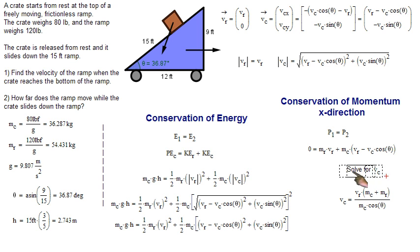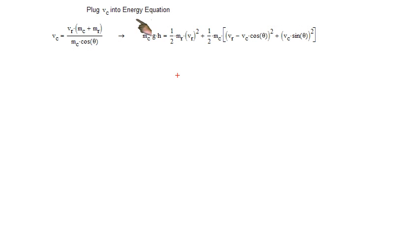So when we solve for VC, we get this, VC equals VR times the total mass divided by MC cosine theta. So bringing down these two guys to the next step, we have to plug VC, what we solved for VR, into the energy equation. We have to plug that into that, and when we do that, we get this.